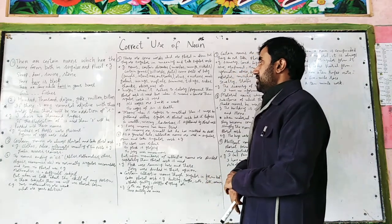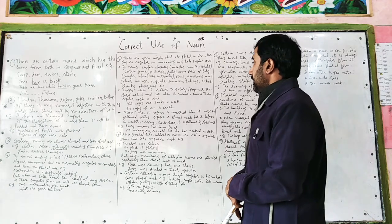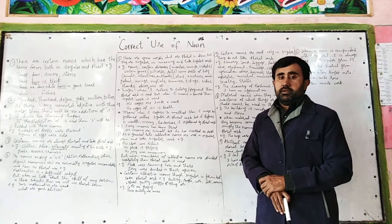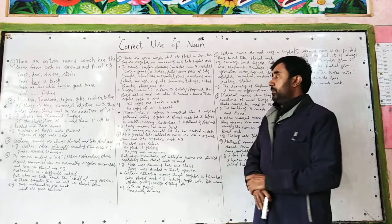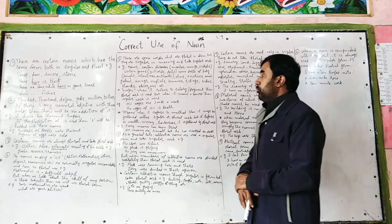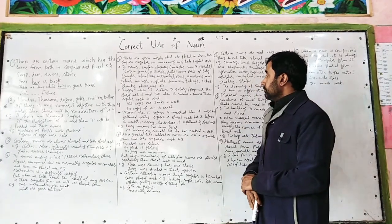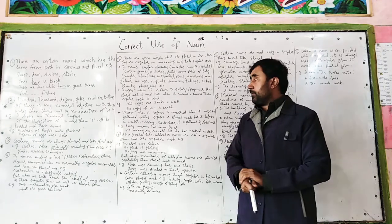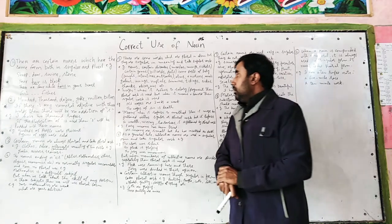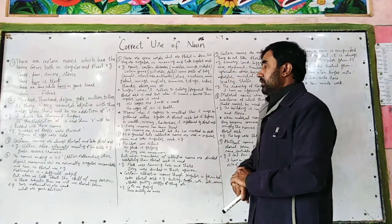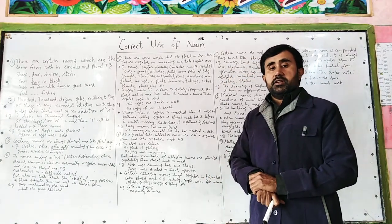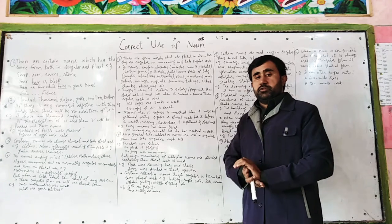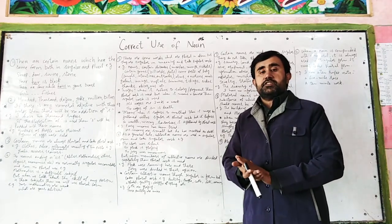But the word 'wages' — when it refers to salary or payment, plural verb is used. For example: 'His wages are two thousand rupees a week.' But when 'wages' means a reward, then singular verb is used. For example: 'The wages of sin is death.'